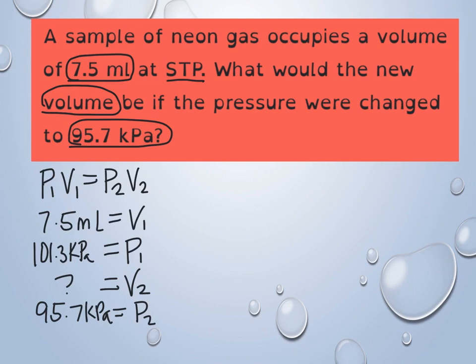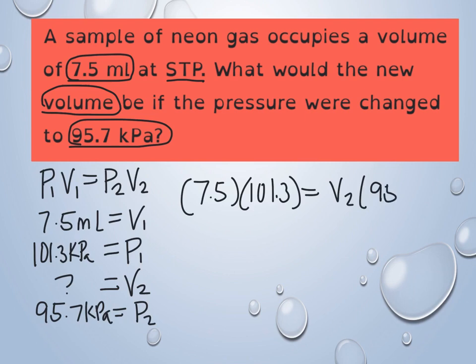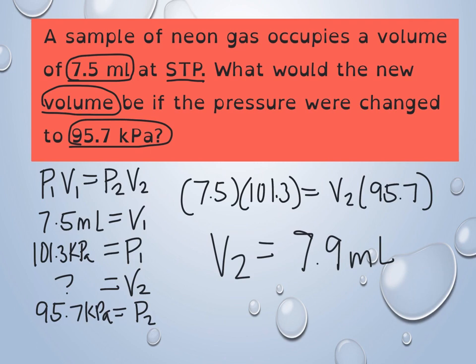It's important to match up numbers that are part of a pair. Plugging in: 7.5 × 101.3 = V2 × 95.7. Multiply the first two numbers and divide by the third, and you get V2 = 7.9 milliliters. Going back to check: our pressure went from 101.3 down to 95.7, so our volume should increase to 7.9. That makes sense.